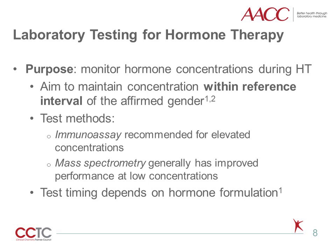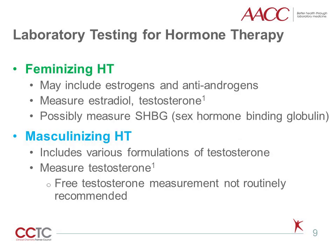The actual timing of testing depends on the hormone formulation, which may include transdermal, oral, or intramuscular. Feminizing hormone therapy may include estrogens in addition to antiandrogens, such as spironolactone or cyproterone acetate. Therefore, it is important to measure not only estradiol, but also testosterone to ensure that it is decreasing. Once the concentration of testosterone stabilizes at concentrations expected for cis women, monitoring can be performed less frequently or whenever the dose is changed.